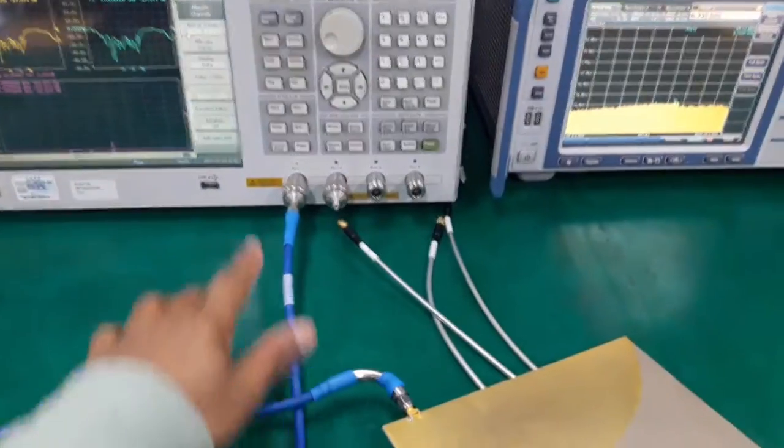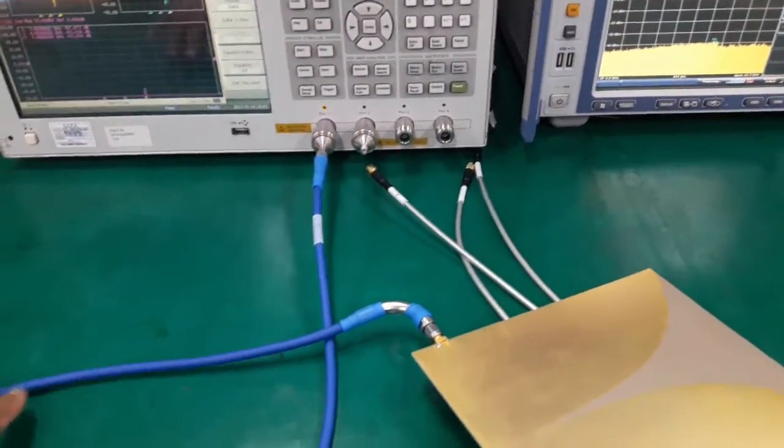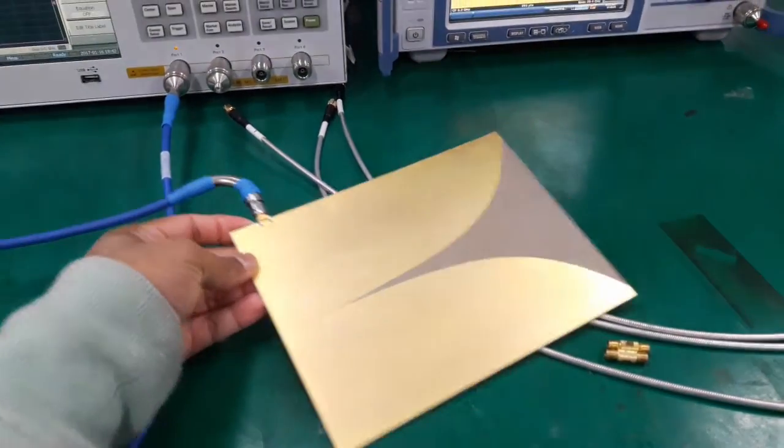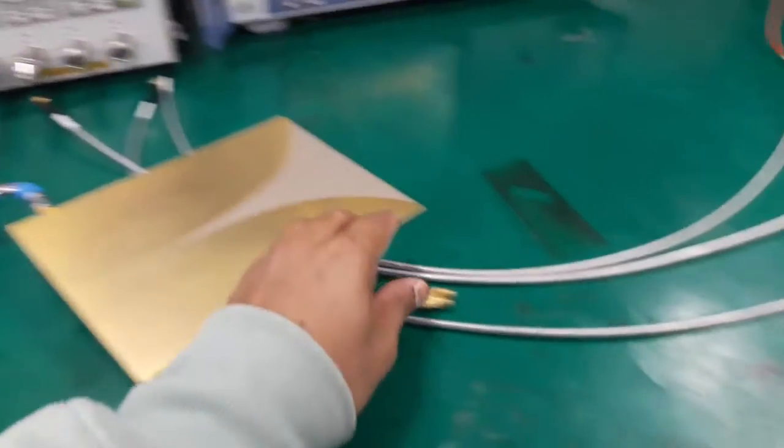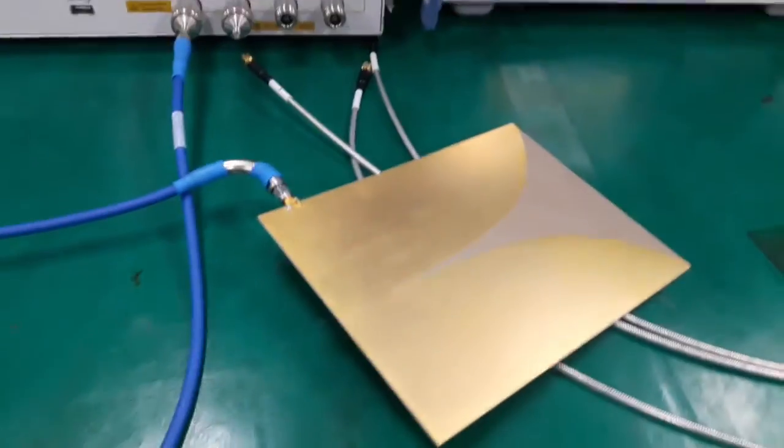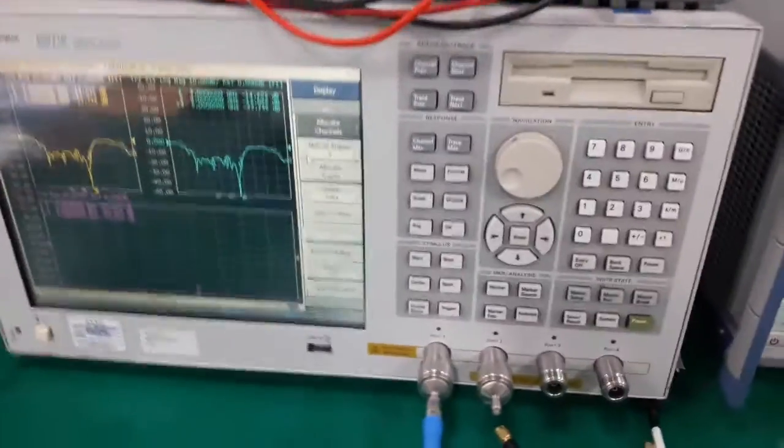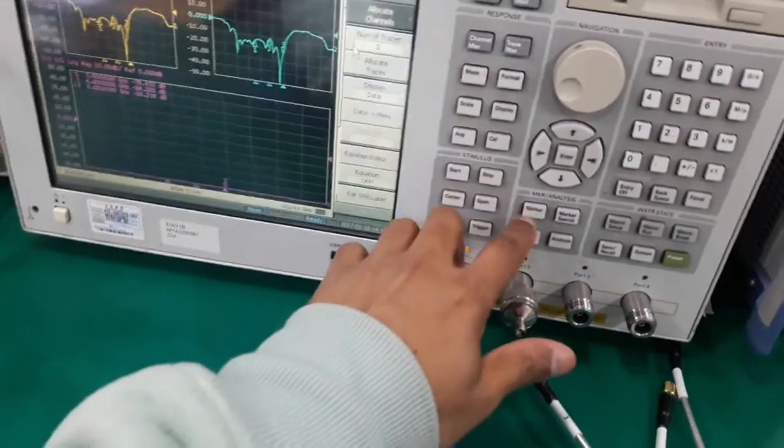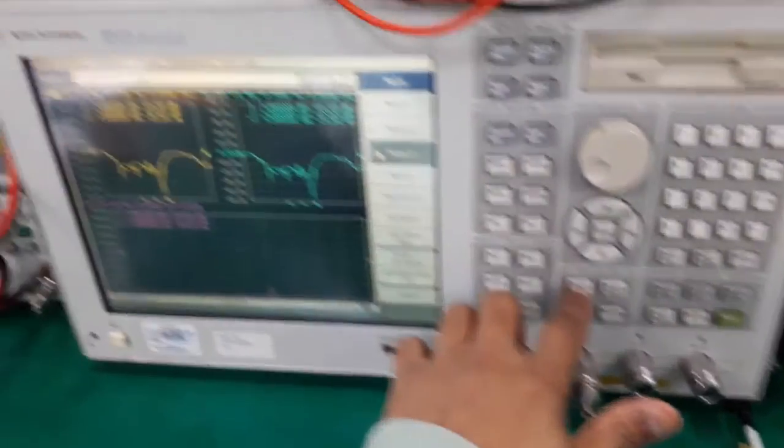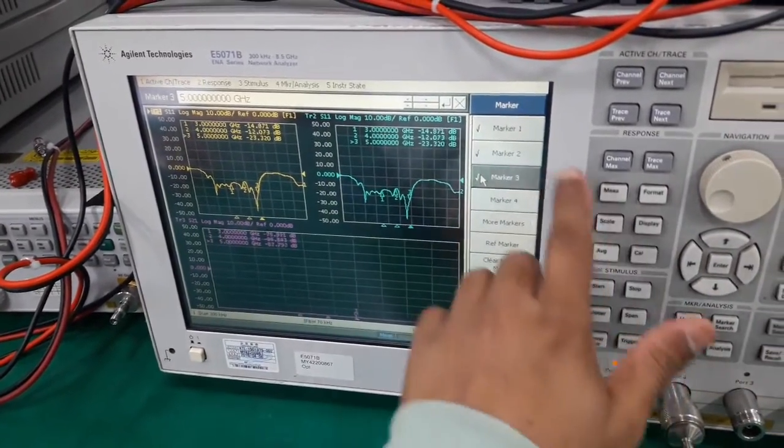As you can see, the port 1 is connected to Vivaldi SMA connector. And already calibration has been done. So what I'm going to see is the S11 magnitude of this Vivaldi antenna.